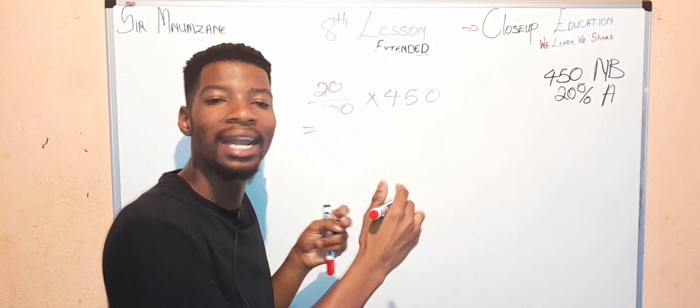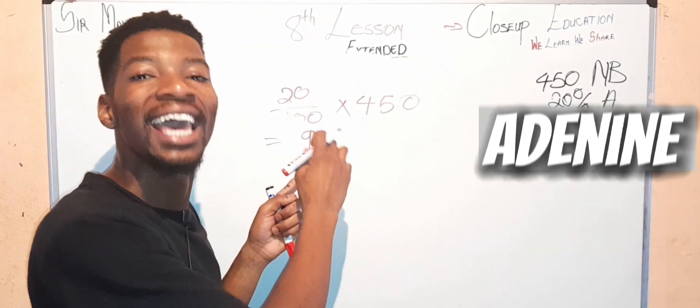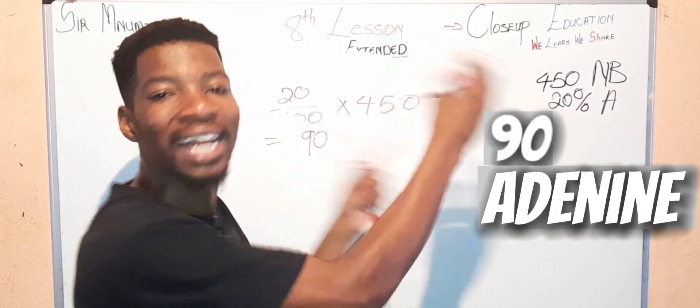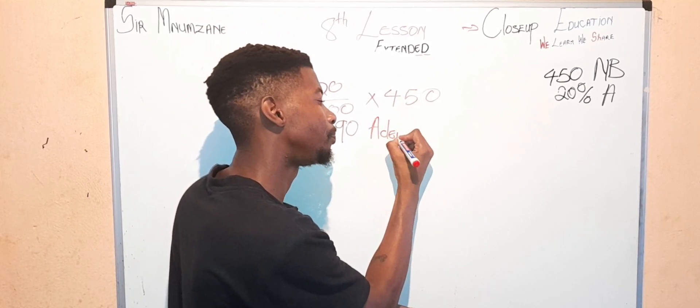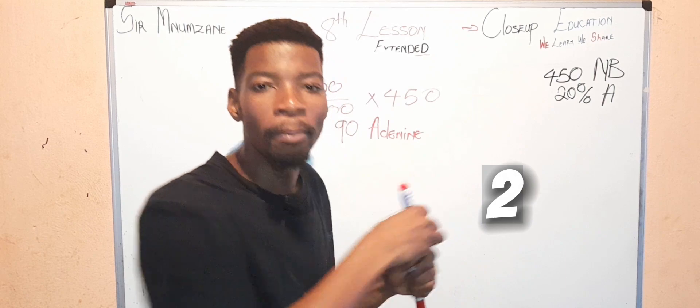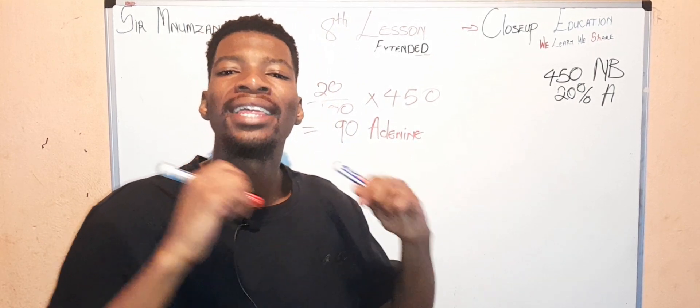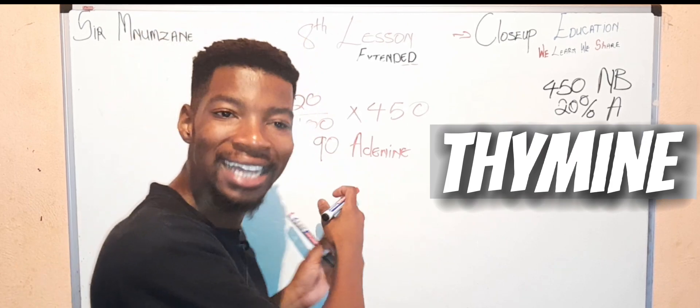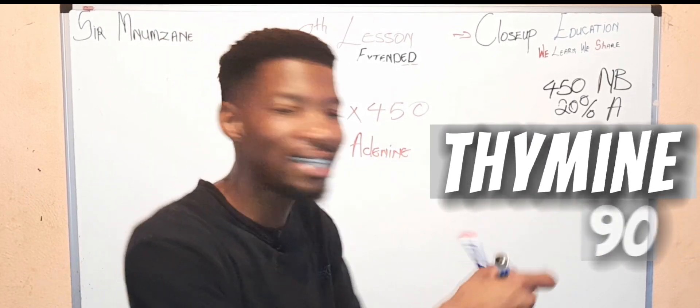Our answer will be none other than 90. So now we know that there are 90 adenine inside this 450 nitrogenous bases. Second step, what does adenine pair with? Adenine pairs with thymine.